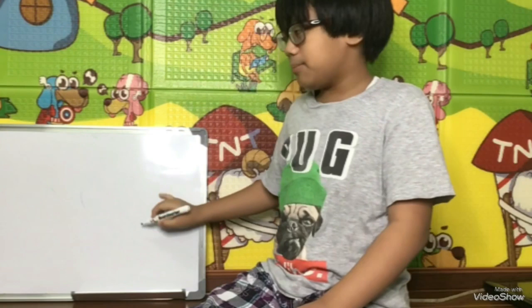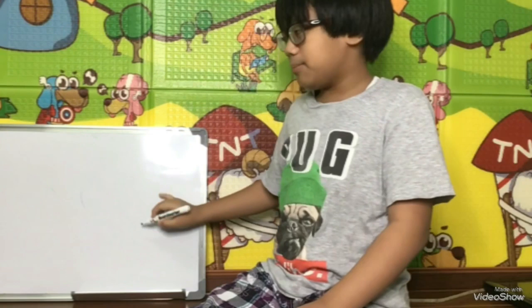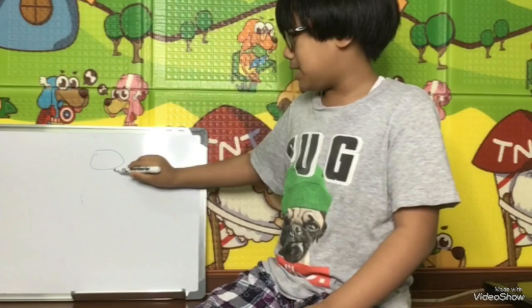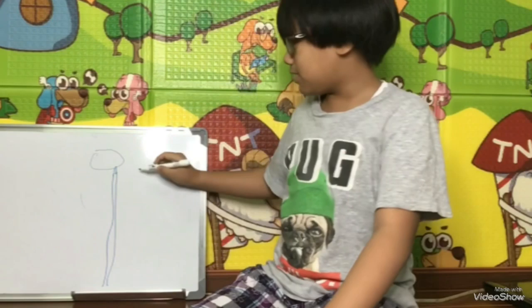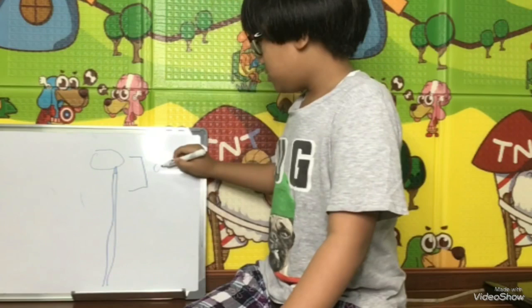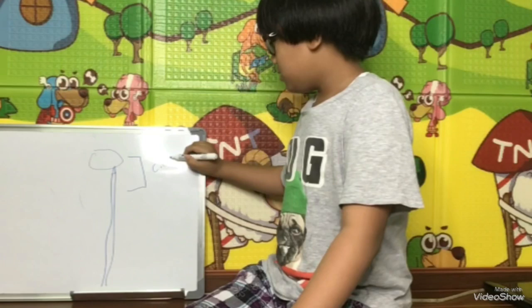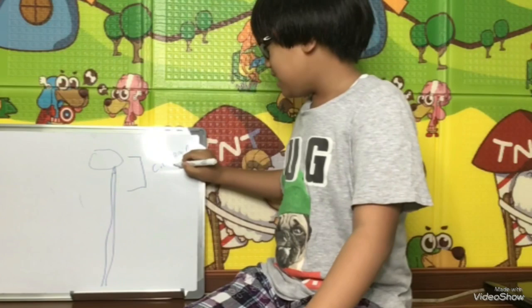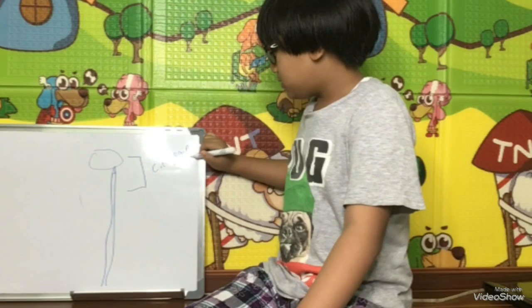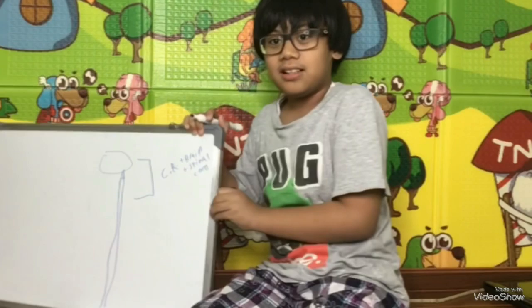If it passes the blood barrier to the brain — let me draw a big circle — this is the central nervous system. The parts of the central nervous system are the brain and the spinal cord. So, brain and spinal cord — that's the central nervous system.